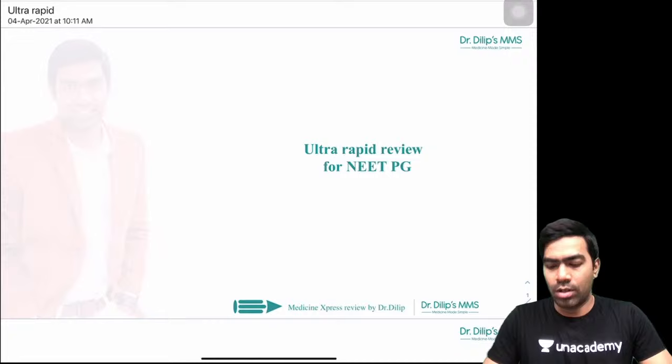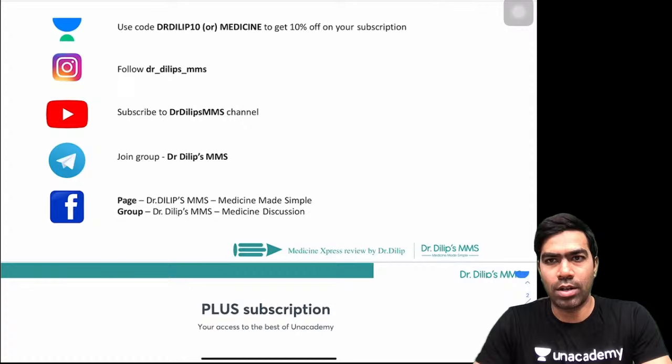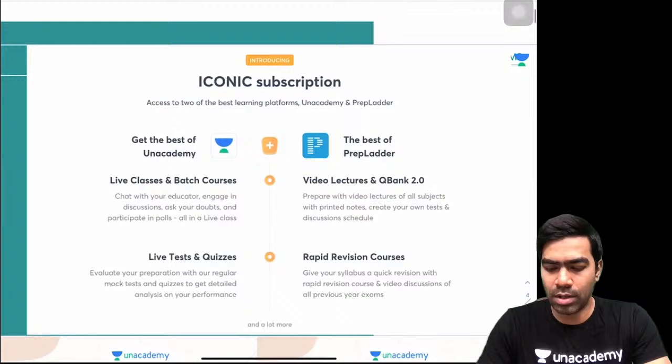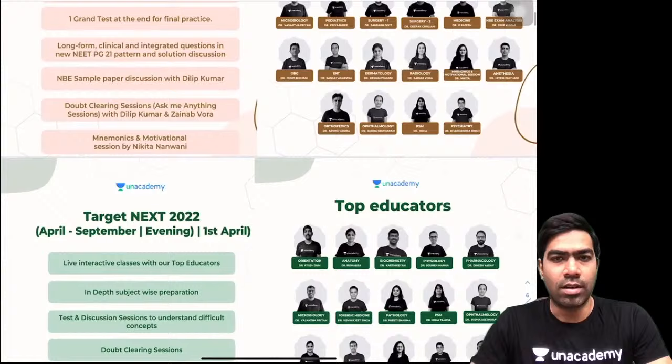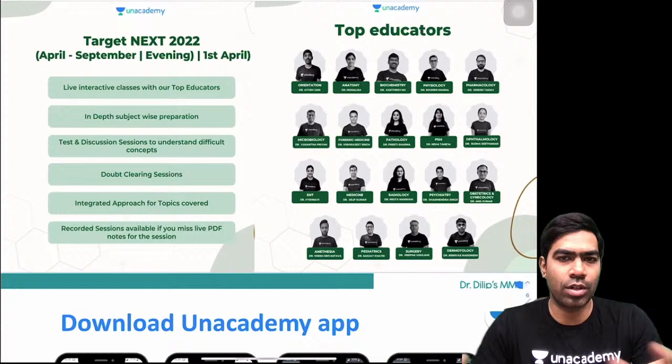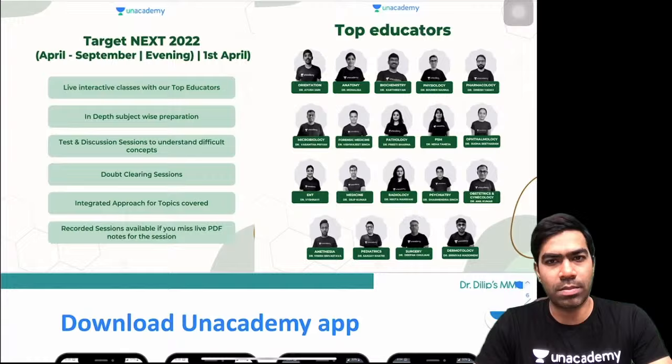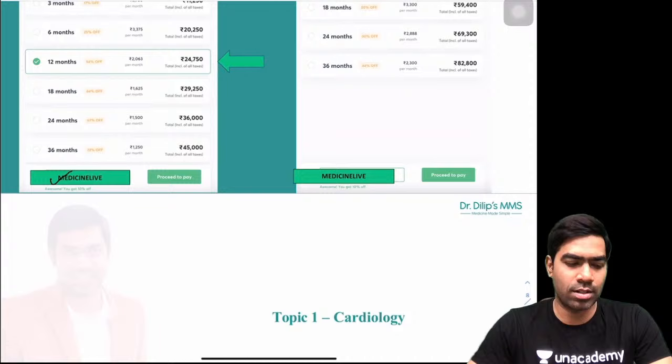You can find my social media IDs to get in touch with me anytime. There is a plus subscription and an iconic subscription available at the academy. Two batches are coming up: one is for NEET PG 2021 — an ultra rapid course with NB exam analysis — and the other is a 2022 batch covering medicine in around 120 to 140 hours in depth. Using the code 'medicine live' you can get a 10% extra subscription discount.